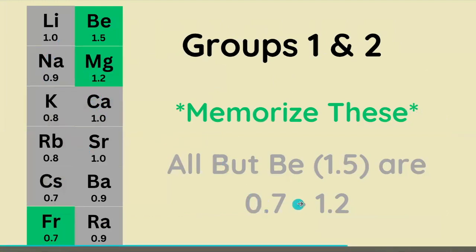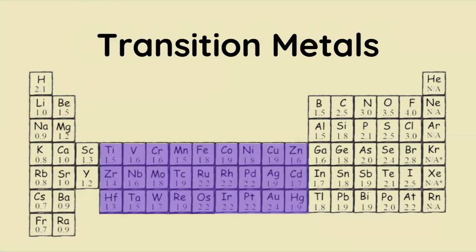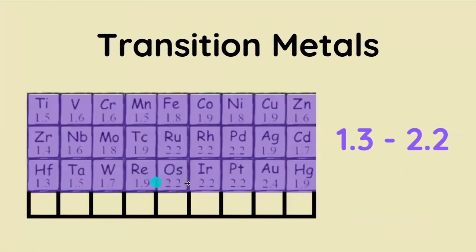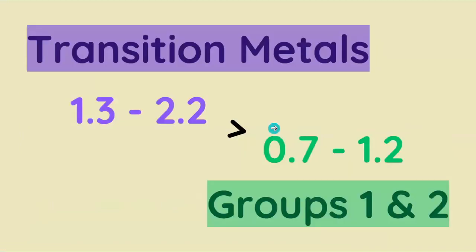Next up, the transition metals. There's actually four rows of transition metals, but the lowest row doesn't even have electronegativity values. Everything else fits within the range of 1.3 to 2.2.